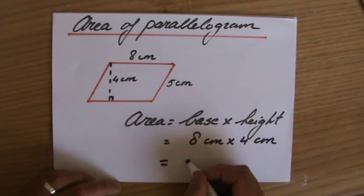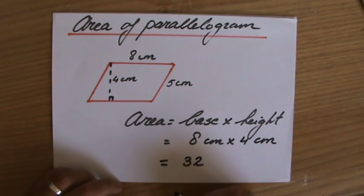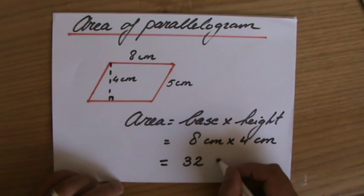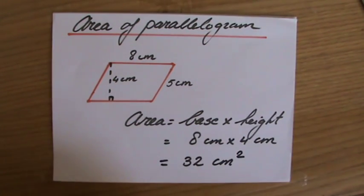8 times 4 is 32. And a centimeter times a centimeter is a centimeter to the power 2. Centimeter squared.